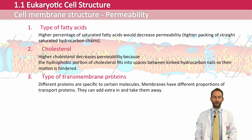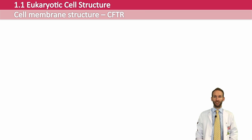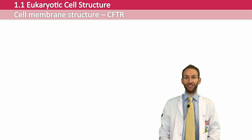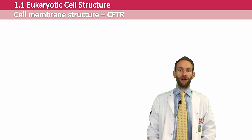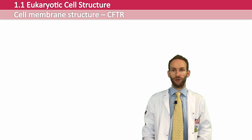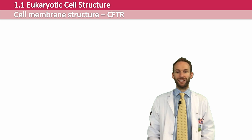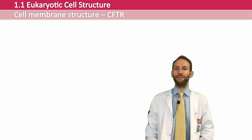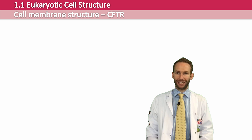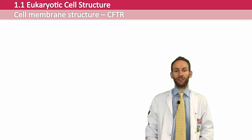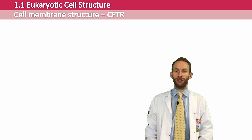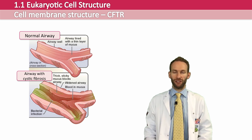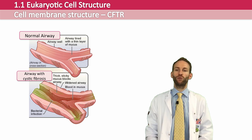In section 1.6, you're going to learn much more about a special transport protein called the Cystic Fibrosis Transmembrane Conductance Regulator — much easier to refer to as CFTR. What the CFTR does is ensure that mucus produced by cells in the respiratory, digestive, and reproductive systems is just the right level of stickiness — not too thick and sticky, but also not too watery. Mutations of the CFTR gene lead to a disease called cystic fibrosis, which is covered in section 1.6.